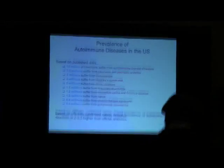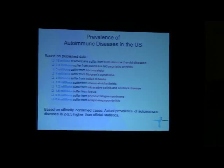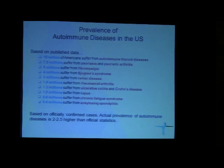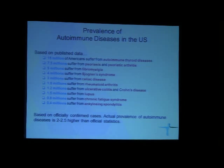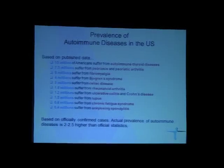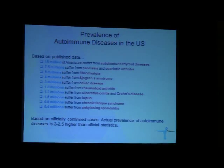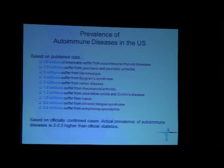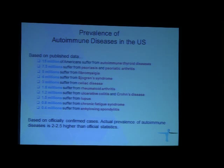Let's talk about the prevalence of autoimmune diseases in the United States. You can find different data depending on publications. Definitely without any exceptions, the most prevalent autoimmune disease is a cluster of autoimmune thyroid diseases, which incorporates Hashimoto disease and Graves disease, and various variants between them. The second disease, which is also very prevalent, is a cluster of psoriasis and psoriatic arthritis. However, depending on different publications, some people feel the second place is occupied by rheumatoid arthritis. Fibromyalgia, Sjogren's syndrome, celiac disease, rheumatoid arthritis, colitis, lupus — all these numbers count in millions and millions of patients — and then chronic fatigue syndrome and ankylosing spondylitis, among others.